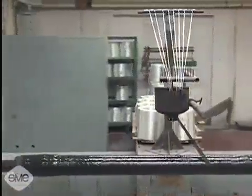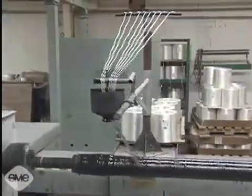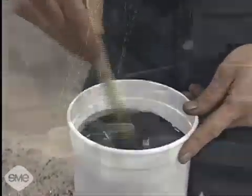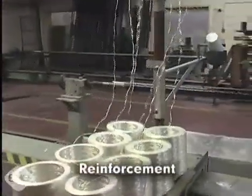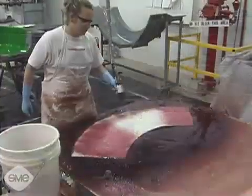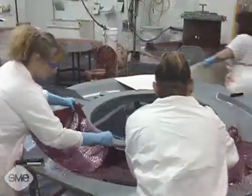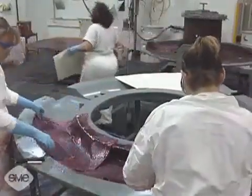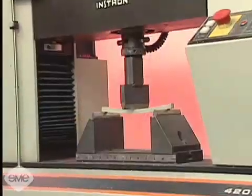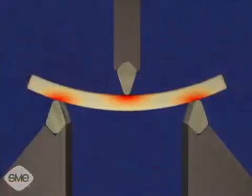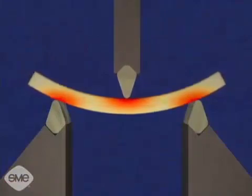The term composite has come to mean a material consisting of a matrix or base material and a reinforcement material. The matrix functions as a binder for the reinforcement and controls the physical shape and dimensions of the part. The primary purpose of the matrix is to transfer the load or stress applied to the composite to the reinforcement. The matrix also protects the reinforcement from adverse environmental effects.